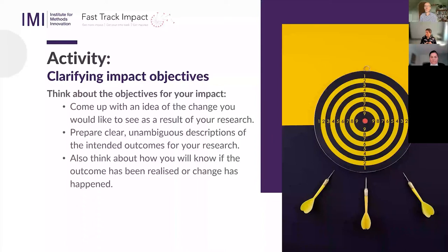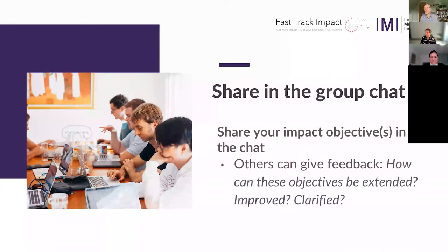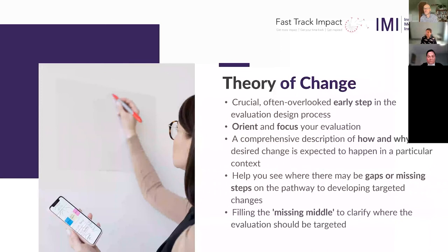I'd like you to use the chat to get a little bit of interactivity going. Think about one of your own projects and try to state at least one impact objective very clearly, explicitly, and concretely. Try to craft this in one clear and concrete sentence, share it in the group chat, and others can give replies and feedback. The kinds of feedback useful when developing impact objectives are: how could this be more clear, how could this be more explicit, does it make sense to other people beyond just the one writing the objective?